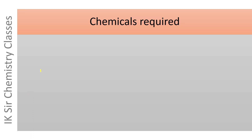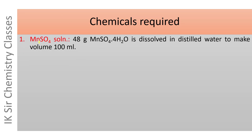Let us see which types of chemicals will be required in Winkler's method for the determination of DO value of a water sample. First of all, we will require Mn(OH)₂ solution. For the preparation of this solution, 48 grams MnSO₄·4H₂O is dissolved in distilled water and the volume is made 100 ml.